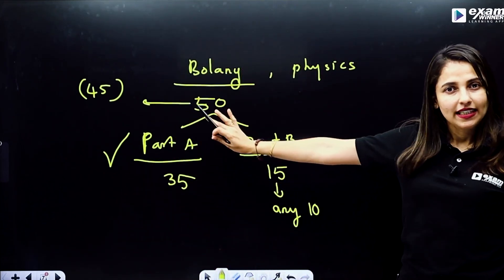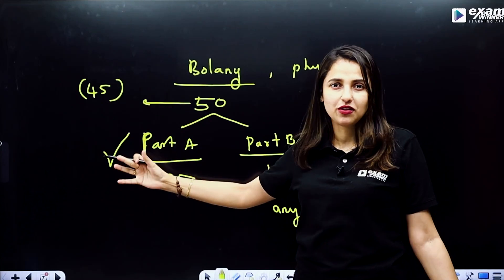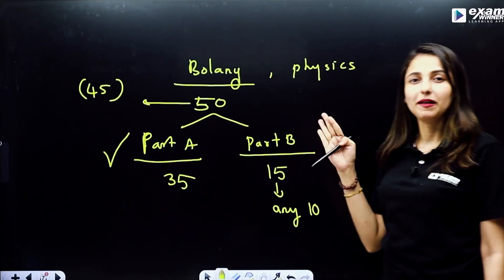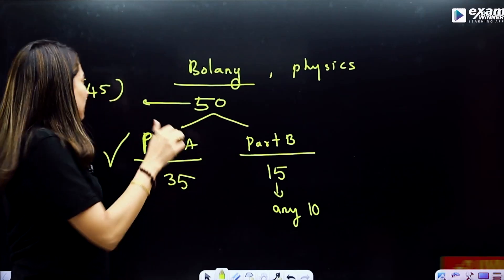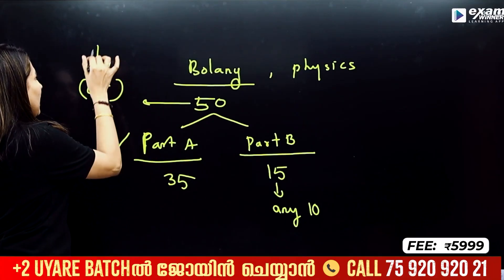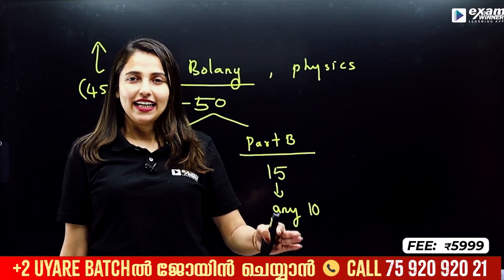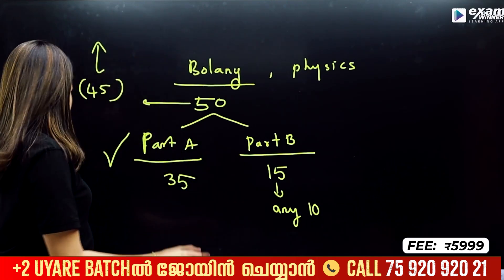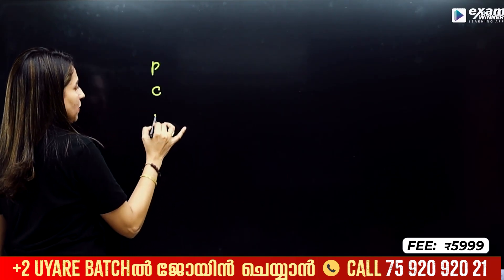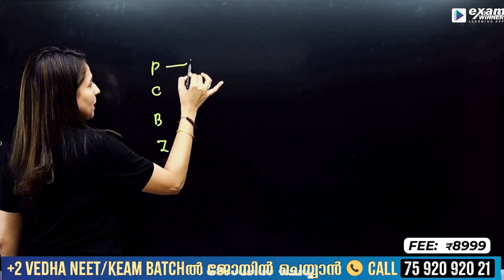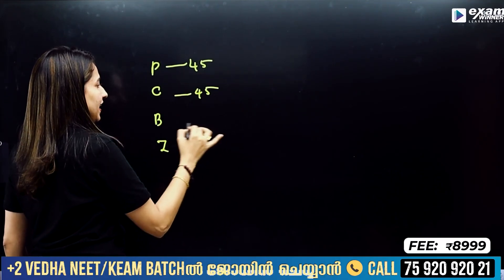In Part A you have 35 questions, and in Part B you have 15 questions. For example, with 15 questions in Part B across Physics, Chemistry, Biology, Botany, and Zoology — you have to attempt 45 questions total and answer all of them.